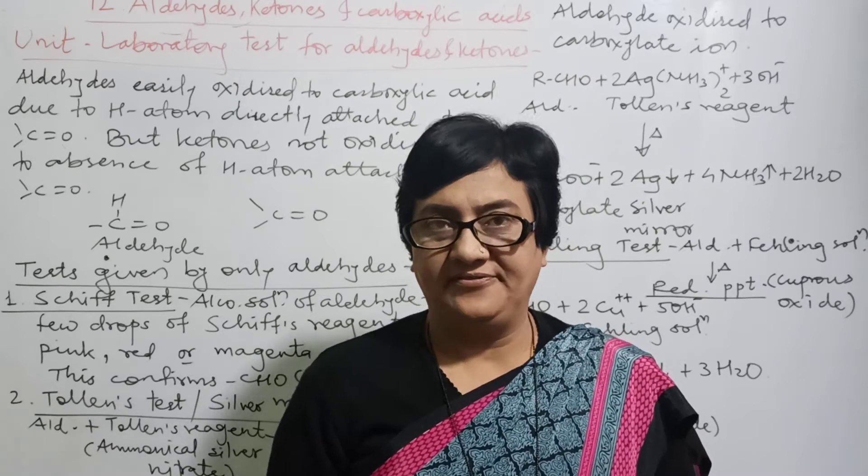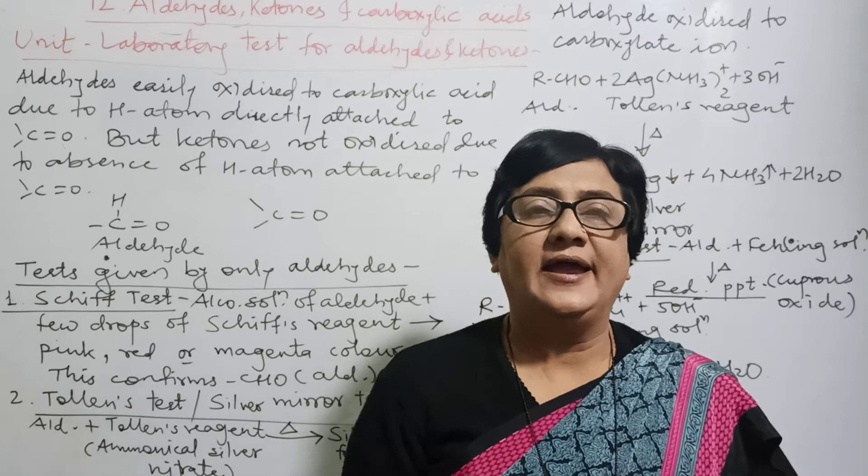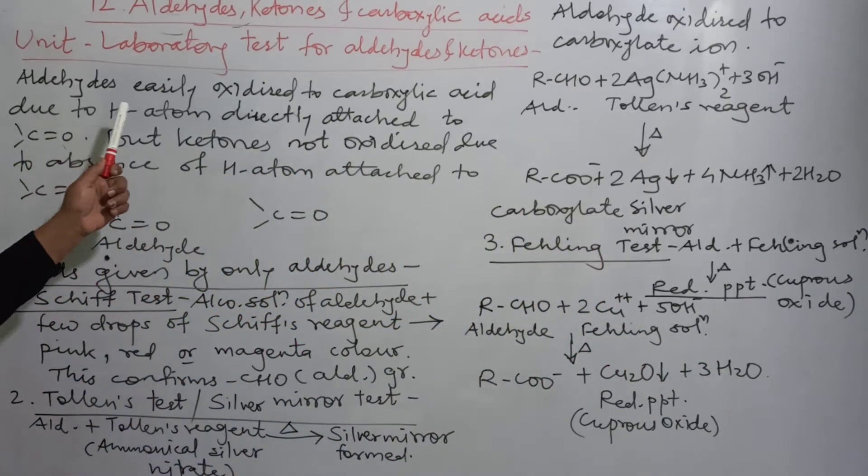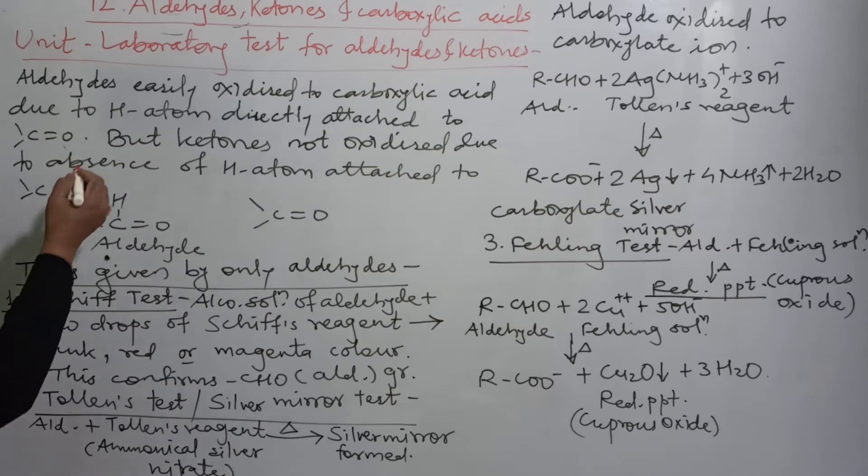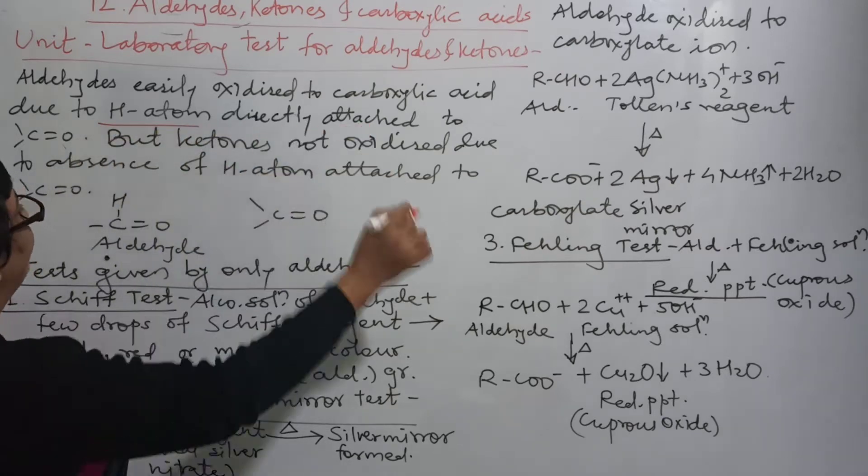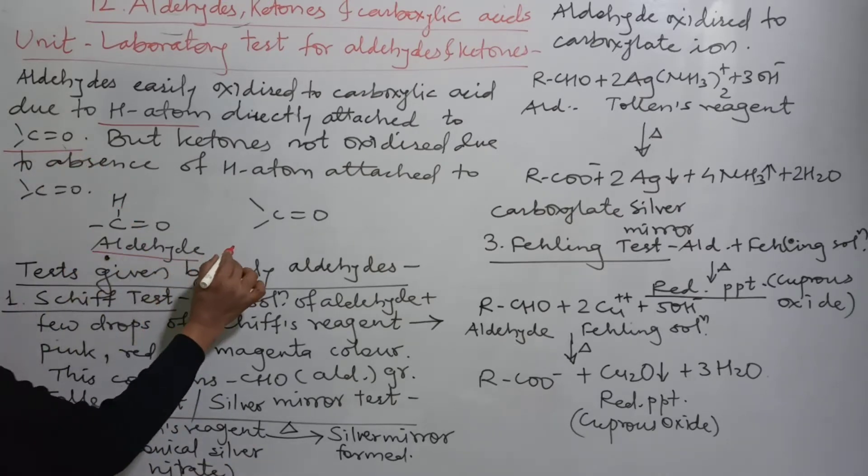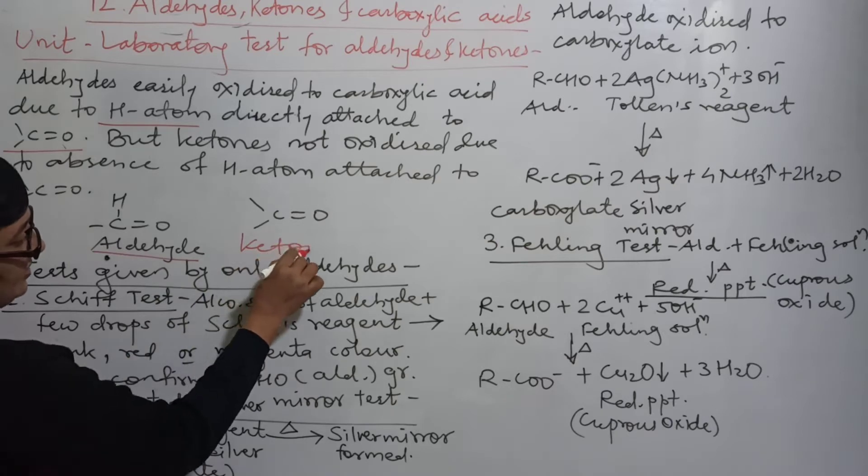So you can identify this is a ketone, this is an aldehyde. And the reason behind that is aldehydes easily oxidize to carboxylic acid due to the hydrogen atom directly attached to the carbonyl carbon. This is the aldehyde and this is the ketone.